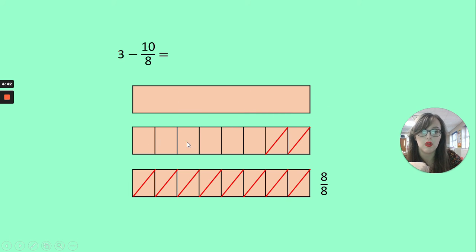And 1, 2, 3, 4, 5, 6 eighths. So my final answer is going to be 1 hole and 6 eighths. I could write this in a number of different ways. I could find the equivalent fraction. So we know that 6 eighths is the same as 3 quarters. So my answer could also be 1 hole and 3 quarters.